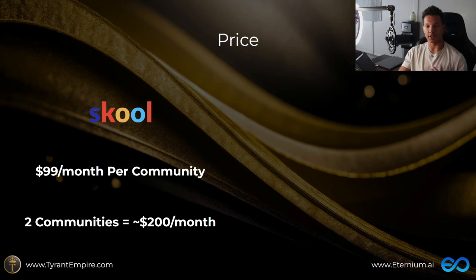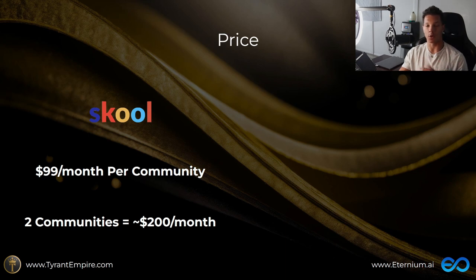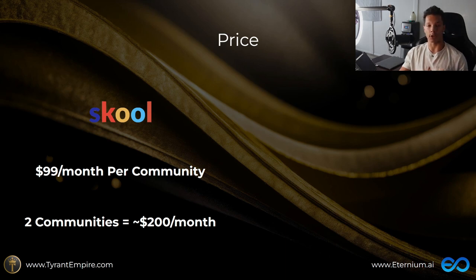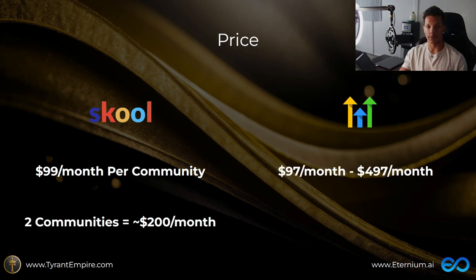The pricing with School is $99 a month per community. The meta — the most effective tactic available for School users — is to create two communities. Most people create a free community and a paid community, giving out free value in the free one but locking value behind the paywall of the paid community. It's a great business model, but with $99 per community, two communities will cost you around $200 a month.